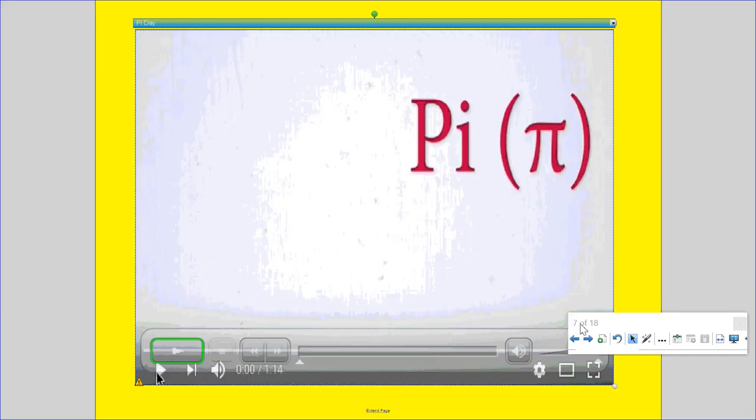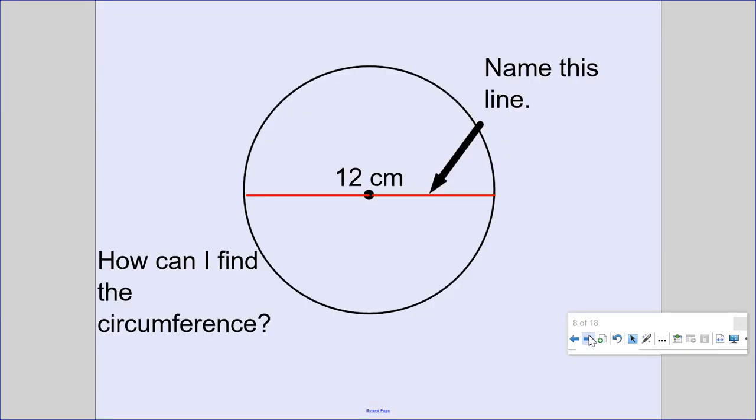Pi Day is March 14th, if you didn't know that by now. So for example, how can I find the circumference? Name this line. This line is called diameter. So this line is called diameter. How can I find circumference? I know it takes about 3.